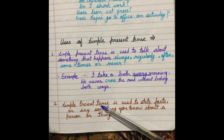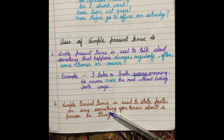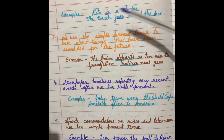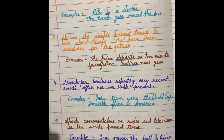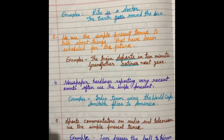Simple present tense is also used to state facts and to say something you know about a person or thing. अगर आप definitely जानते हैं कि ये person या thing के बारे में — tab bhi hum simple present tense use karte hain. For example: Rito is a doctor; The earth goes round the sun. This is a fact, a universal truth, so we use simple present tense for these types of sentences.